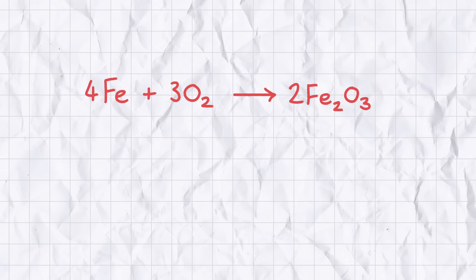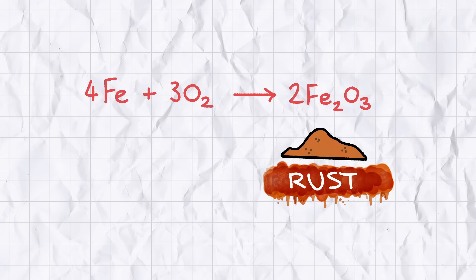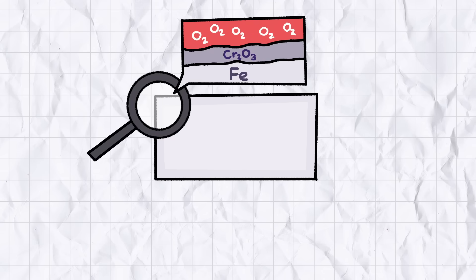After prolonged exposure to oxygen, iron will form iron-3 oxide, a brownish red solid colloquially known as rust. Stainless steel doesn't rust because there's a thin protective layer of chromium oxide protecting the iron from undergoing oxidation.